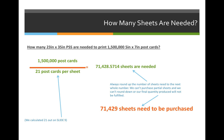It comes out to seventy-one thousand four hundred and twenty-eight point five seven one four sheets needed. Now I can't print point five seven one four sheets, so I'm going to round that up and say that I would like to purchase seventy-one thousand four hundred and twenty-nine sheets.